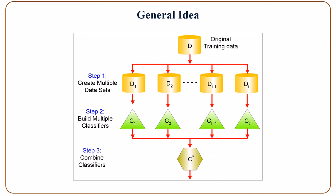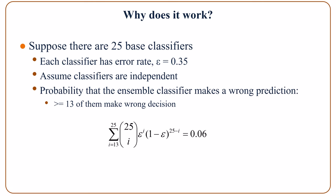Once we have all the trained classifiers we can combine them. Let's see why this works. Suppose we have 25 base classifiers and each classifier has an error rate of 35%. Assuming classifiers are independent, let's calculate the probability that the ensemble classifier makes a wrong decision — it makes a wrong decision when more than half of the base classifiers make wrong decisions.